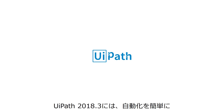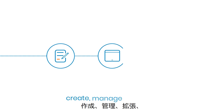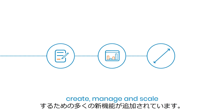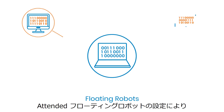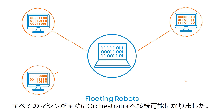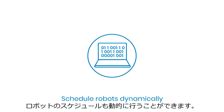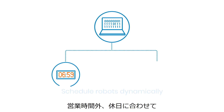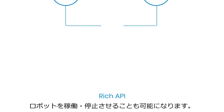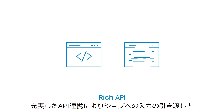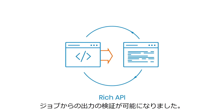UiPath 2018.3 introduces a host of new features to create, manage, and scale your automations easier than ever. Set up your own attended floating robots and connect to them from any machine in the blink of an eye. Schedule your robots dynamically and even set days off for your robots based on down times in your business.